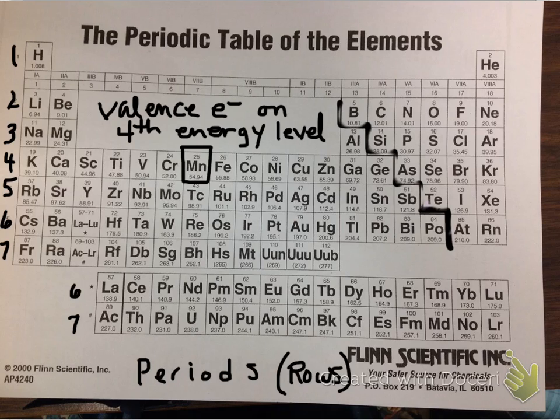Similarly, element number 82, lead, is in the sixth period, so its valence electrons would be found on energy level 6.